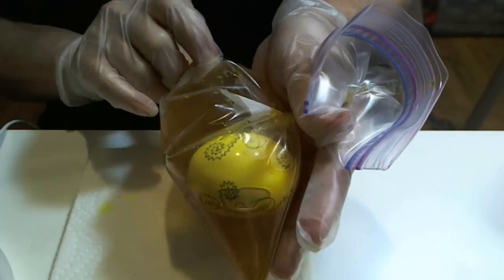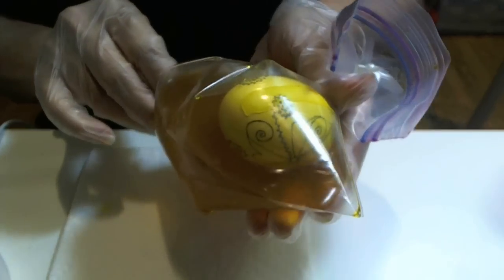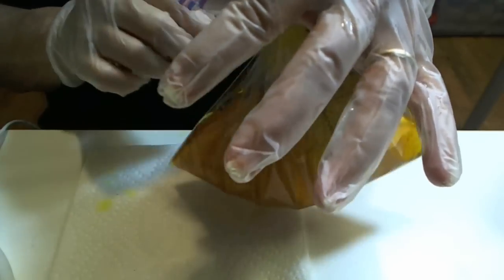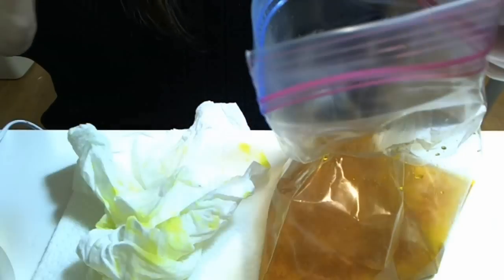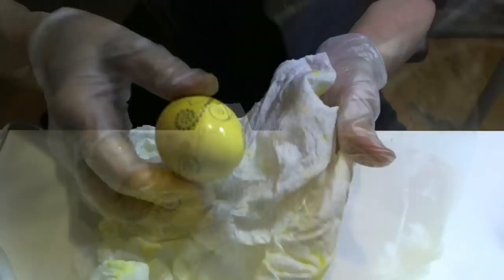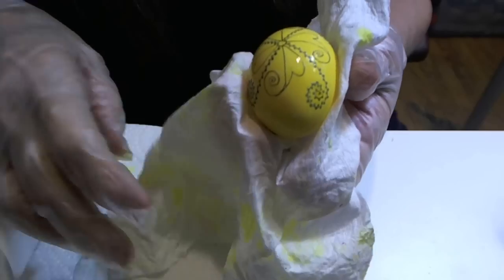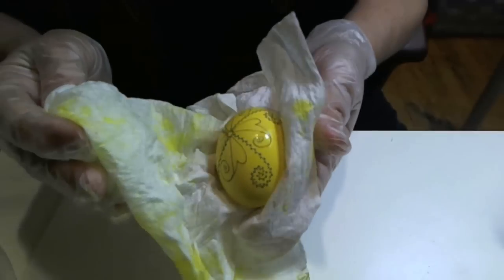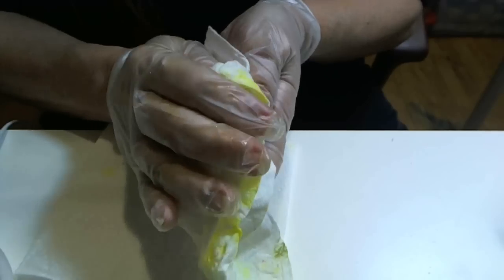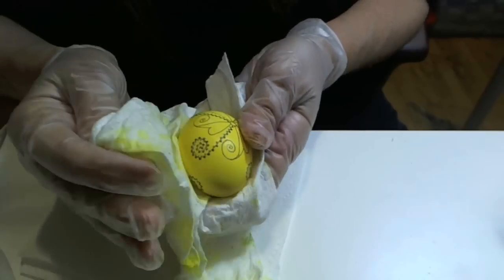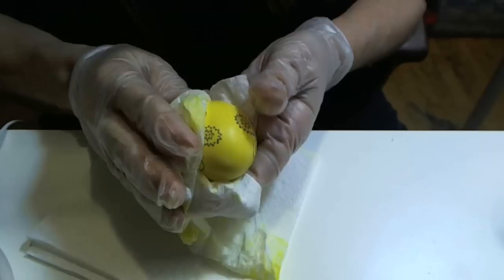Now this egg has taken the dye very nicely, so I can remove this egg at this time. We take the egg out of our dye and it's time to dry it. All we want to do is pat the egg dry. We don't want to rub it. You take the chance of rubbing your dyes off doing that.